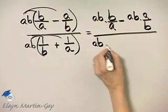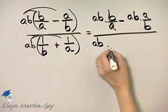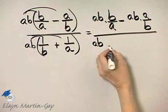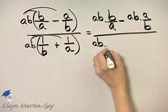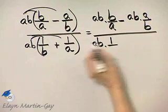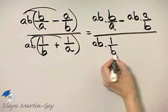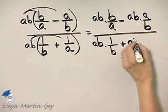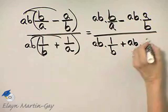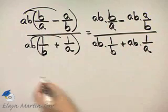and then I have AB. In other words, because of the distributive property, it gets multiplied by every single expression in the numerator and denominator, or term, if you will, plus AB times 1 over A.